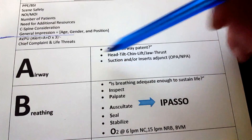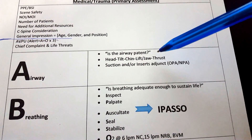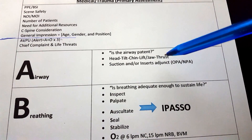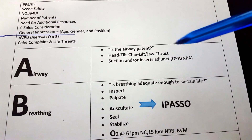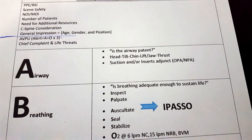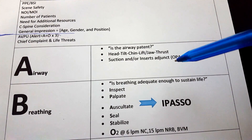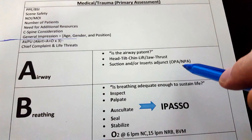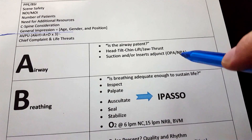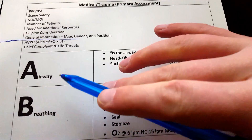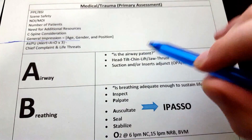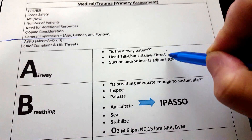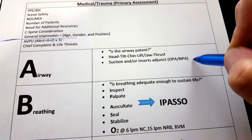For your airway, ask: does my patient have a patent airway? Is it open? Is there air moving in and out? If they're unconscious, do a head tilt chin lift. If it's a trauma situation, do a jaw thrust. Suction if necessary — remember, don't suction for more than 10 seconds. Then use the appropriate airway adjunct, OPA or NPA. Hit these points and you'll get your points on the NREMT.